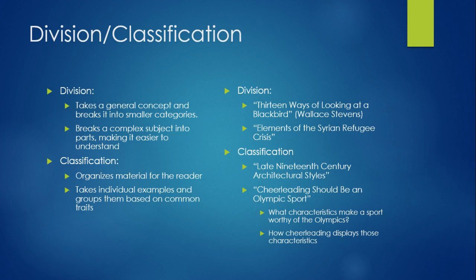Or in an essay that argues cheerleading should be an Olympic sport, the first thing you need to do would be to say what characteristics make a sport worthy of the Olympics. After establishing that, you would then have to show how cheerleading displays those characteristics and meets those criteria. That would be a classification type project.